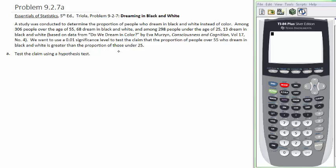This is a hypothesis test problem. A study was conducted to determine the proportion of people who dream in black and white instead of color. Among 306 people over the age of 55, 68 dream in black and white, and among 298 people under the age of 25, 13 dream in black and white. We want to use a 0.01 significance level to test the claim that the proportion of people over 55 who dream in black and white is greater than the proportion of those under 25.